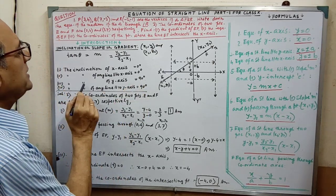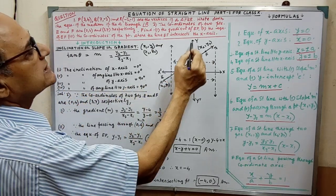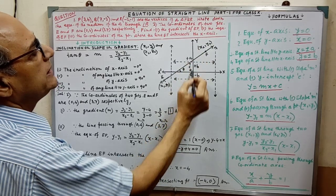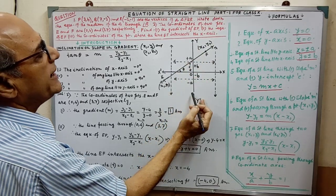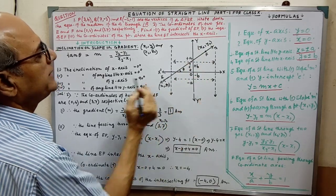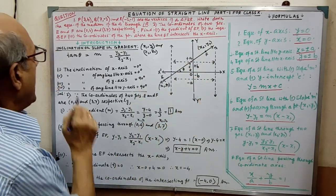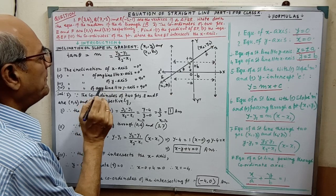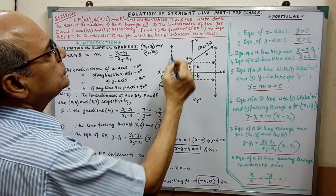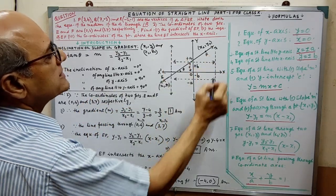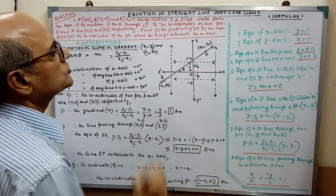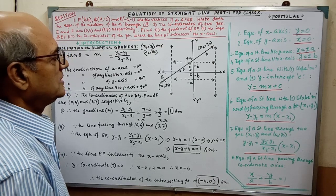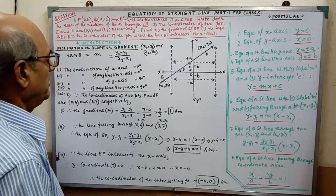The inclination of the y-axis is 90 degrees, and the inclination of any line parallel to the y-axis is also 90 degrees. This you have to remember.